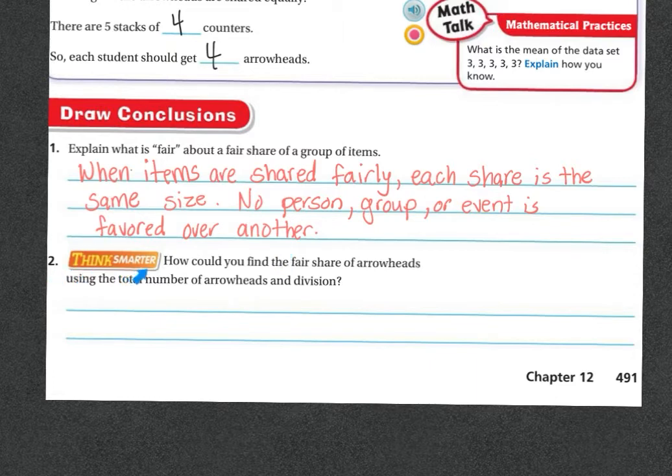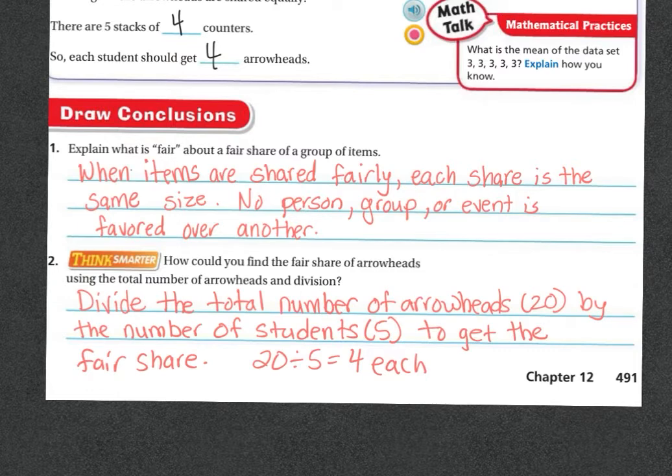Number two. Think smarter. How could you find the fair share of arrowheads using the total number of arrowheads and division? So you're going to divide the total number of arrowheads, which was 20, by the number of students, which was 5, to get the fair share. So 20 divided by 5 equals 4. So they each get 4.